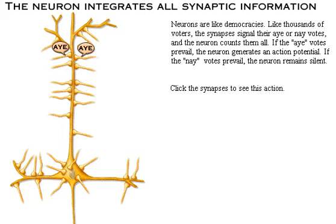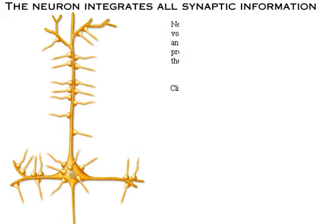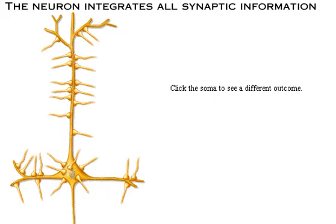The synapses cast their votes: aye, aye, aye, aye, aye, aye, nay. Click the soma to see a different outcome — aye, aye, aye, aye, aye, nay, nay.